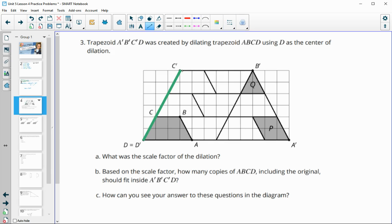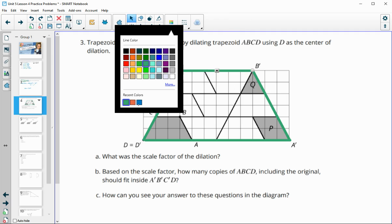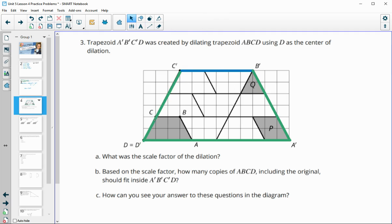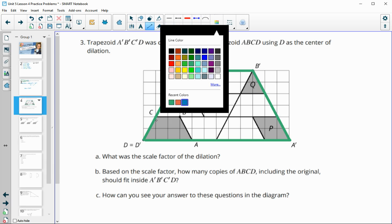So here's A prime, B prime, C prime, D prime. So here's our larger trapezoid. And then, so we just kind of want to see how many times does this smaller one fit into that.